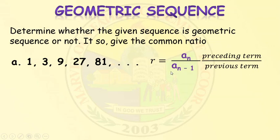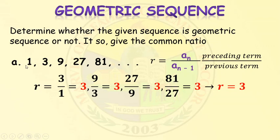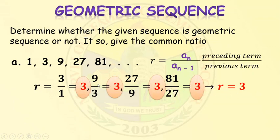There are two approaches we can use to find the common ratio, but the quickest is preceding term over previous term. The preceding term is 3 and the previous term is 1, so 3 over 1 equals 3. Then 9 over 3 equals 3. Then 27 over 9 equals 3. And 81 over 27 equals 3. Therefore, the common ratio r equals 3.